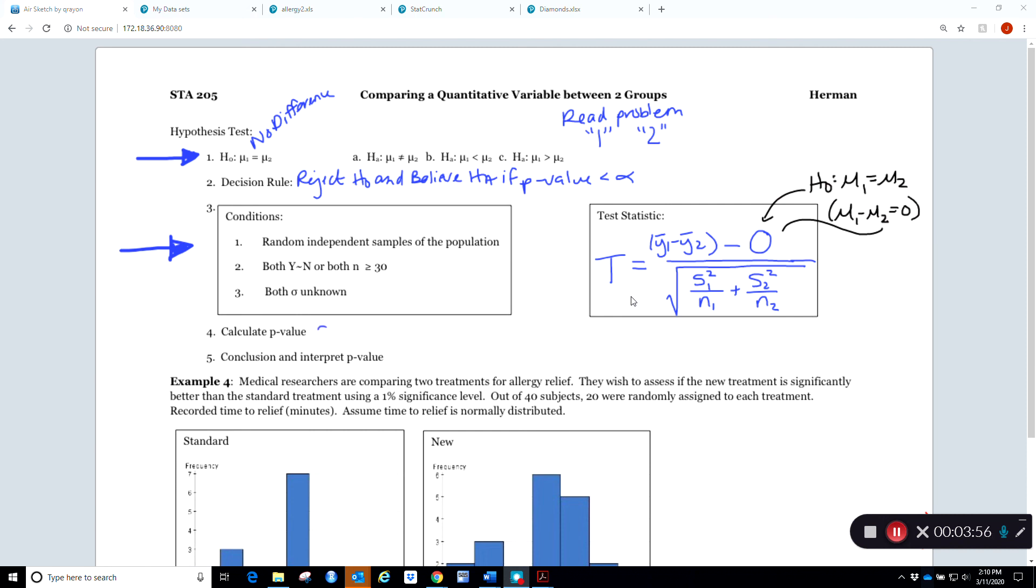Once we hit step four, we're generally getting that p-value from StatCrunch, so I'll demonstrate how to get the p-value from StatCrunch. Once we have that p-value, we go back to step two to make our decision, and then finally we're going to make our interpretation. As you can guess, in the next video we'll go through an example of an independent samples hypothesis test.